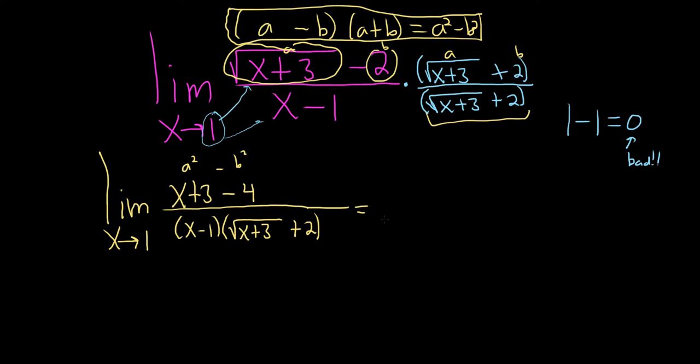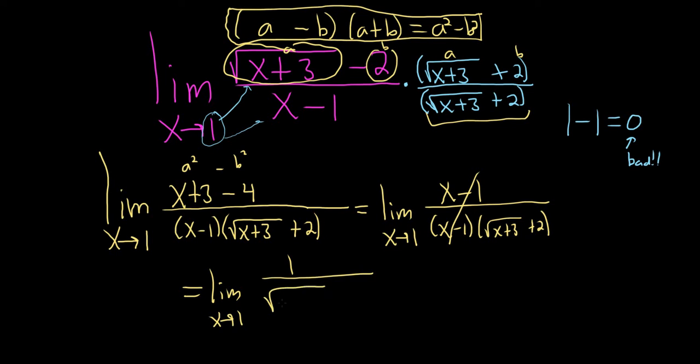So this is equal to the limit as x approaches 1. So in the numerator, we have x minus 1 because 3 minus 4 is negative 1. And in the denominator, we also have an x minus 1. And then we're left with the square root of x plus 3 plus 2. This cancels. This is equal to the limit as x approaches 1. So you have 1 over the square root of x plus 3 plus 2.